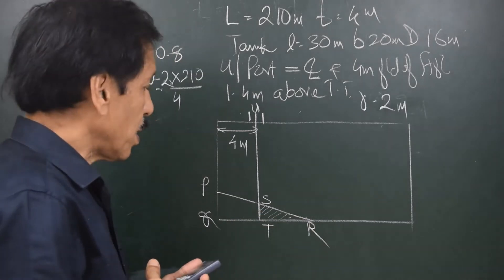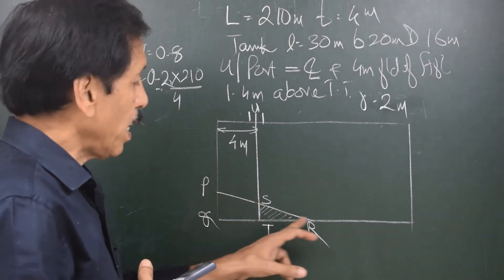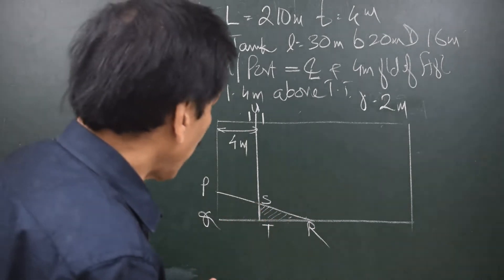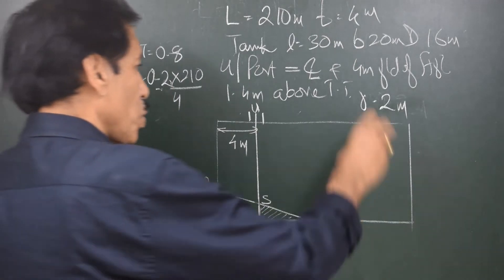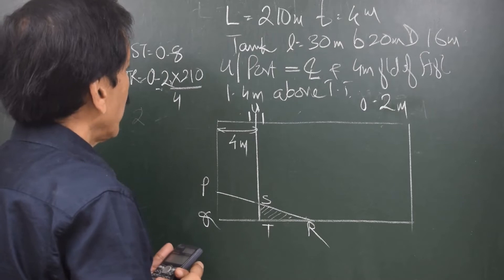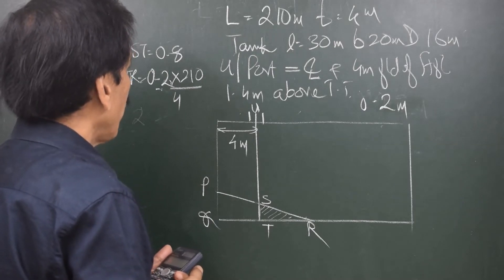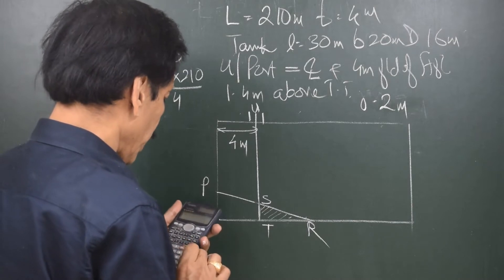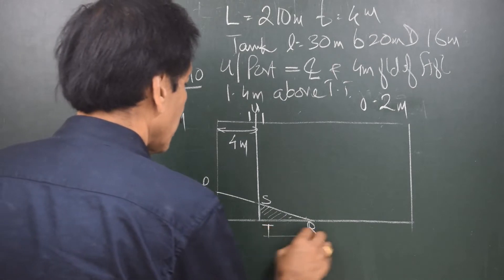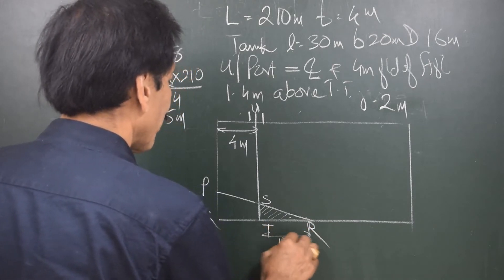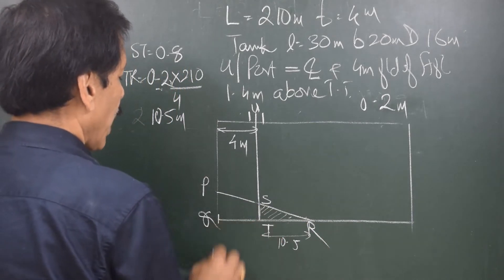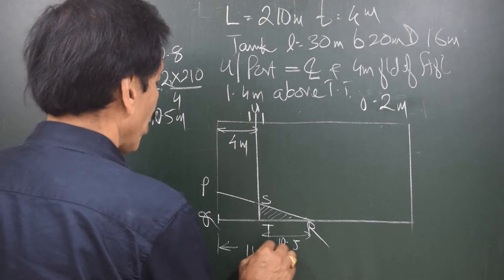If I know the smaller side I can find out the longer side by multiplying with LBP and dividing by trim. So if the sounding is 0.2 meters, then 0.2 × 210 ÷ 4 gives me 10.5 meters. So this distance is 10.5, and because this distance is 4 meters between the ullage port and the aft bulkhead, the total distance is 14.5.